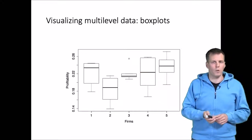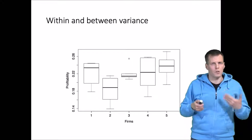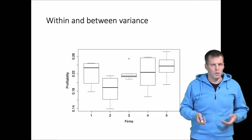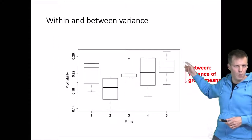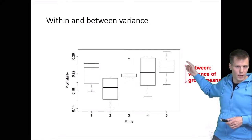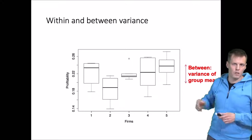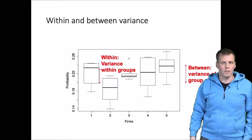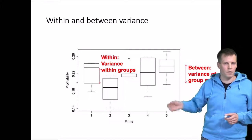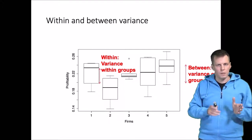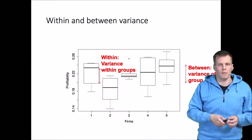Box plots help us understand between and within variance. We can compare the medians or means across groups to see how much variation exists between them — that is our between variation. We can also look at how tall the boxes are, which quantifies the within variance. Comparing these two dimensions tells us whether variation in this variable is more due to differences between firms or due to random variation within firms.